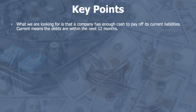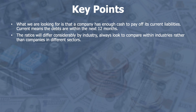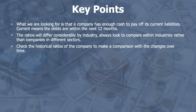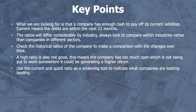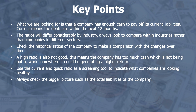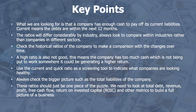Let's look at the key points from the video. What we're looking for is whether the company has enough cash to pay off its current liabilities — anything owed within the next 12 months. Ratios will differ considerably by industry, so we always need to compare within industries. We also need to check historical ratios over time. A high ratio is also not good because it means the company may be holding on to too much cash not being put to work. I like to use the current and quick ratio as a quick screener to indicate which companies are looking healthy, but you always need to check the bigger picture and look at total liabilities. The ratios should be just one part of the puzzle — we also need to look at total debt, revenue, profits, free cash flow, return on invested capital, and many other metrics. We'll never look at just the liquidity ratios on their own. Everything needs to have context.